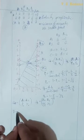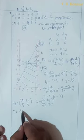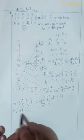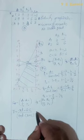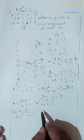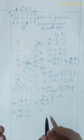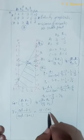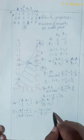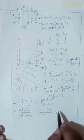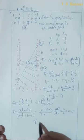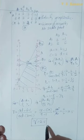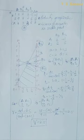Now calculate the value of the game: V = (AD − BC) / (A + D − B − C) = (3×6 − (−1)×2) / 8 = (18 + 2) / 8 = 20/8 = 5/2 = 2.5. The value of the game is 2.5. This is how you solve a 2×N and M×2 problem using the graphical method.